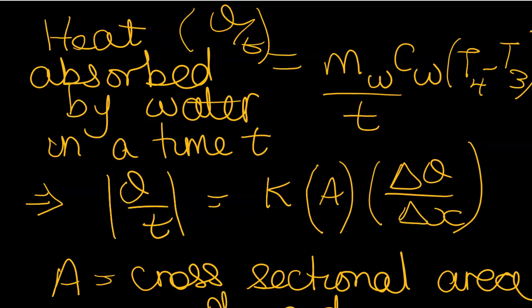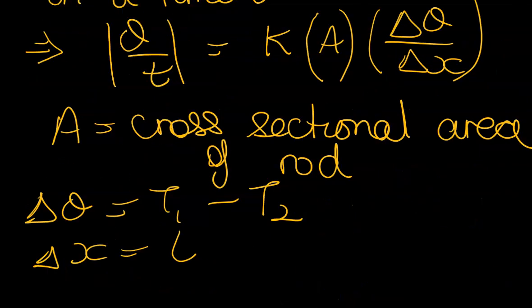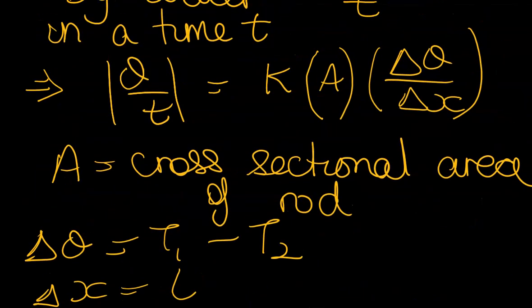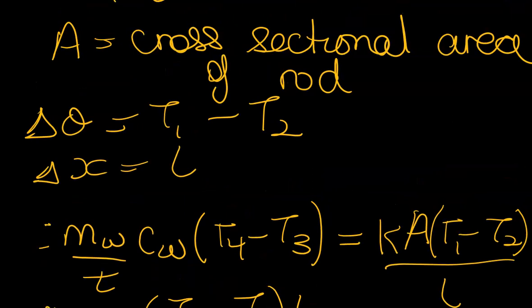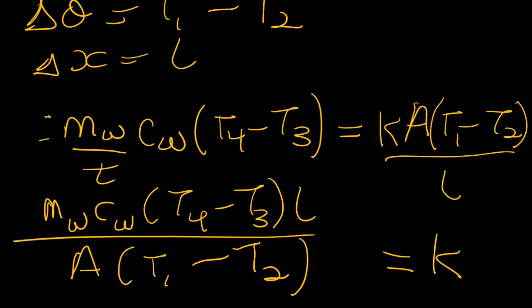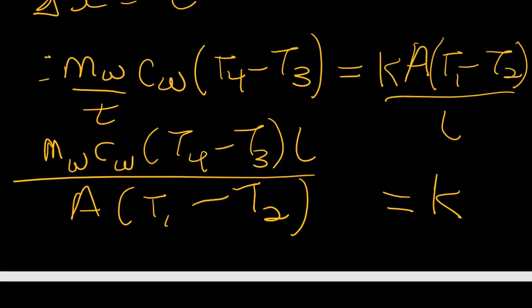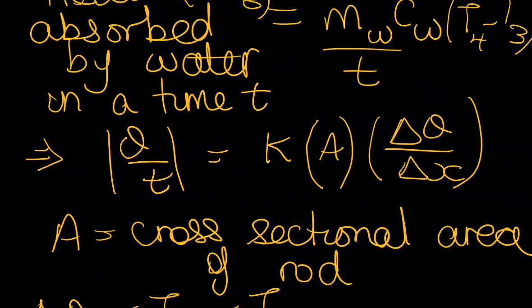And this of course guys is at the end Q because you are determining the heat energy absorbed. So if you are saying that the heat energy absorbed by the water is equal to the heat energy supplied by the steam, then you can get Q over t. And then we equate it because we would have had A, we would have had delta theta and we would have had X. So you can then substitute it to determine K.